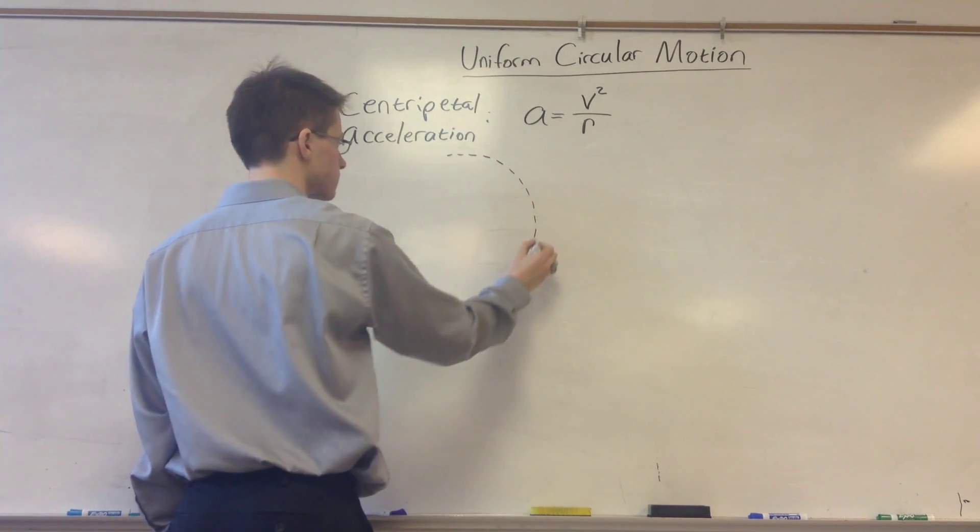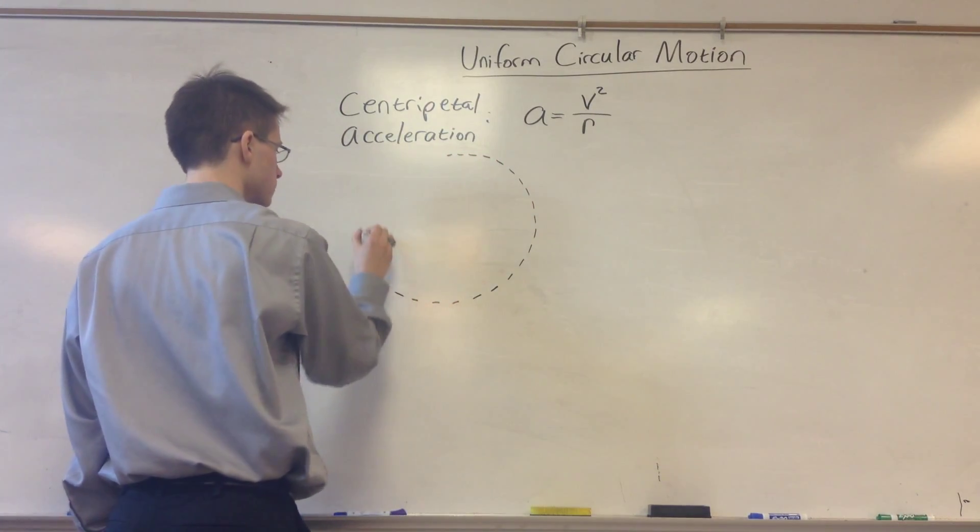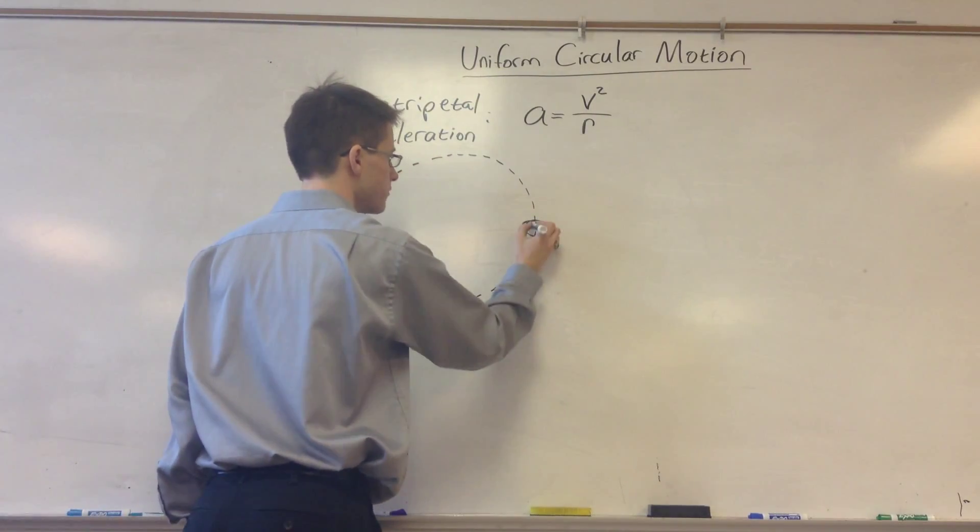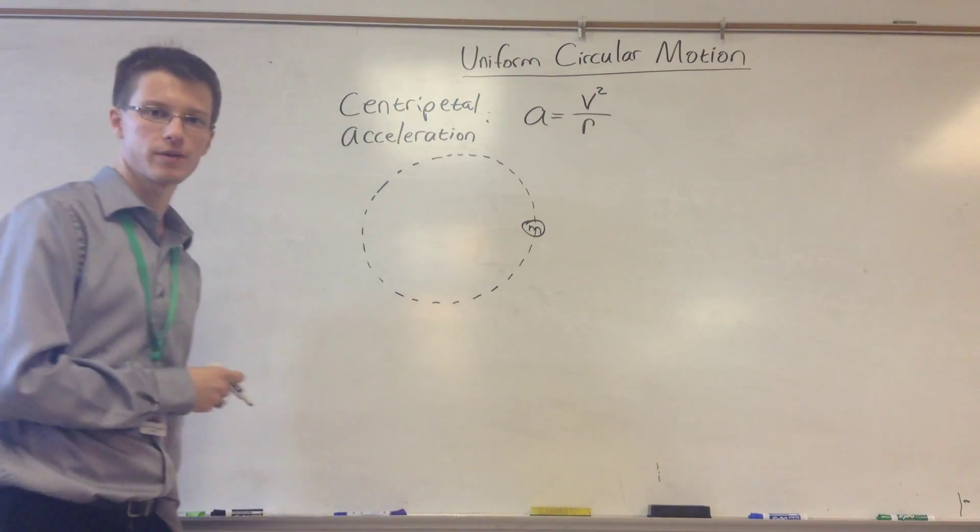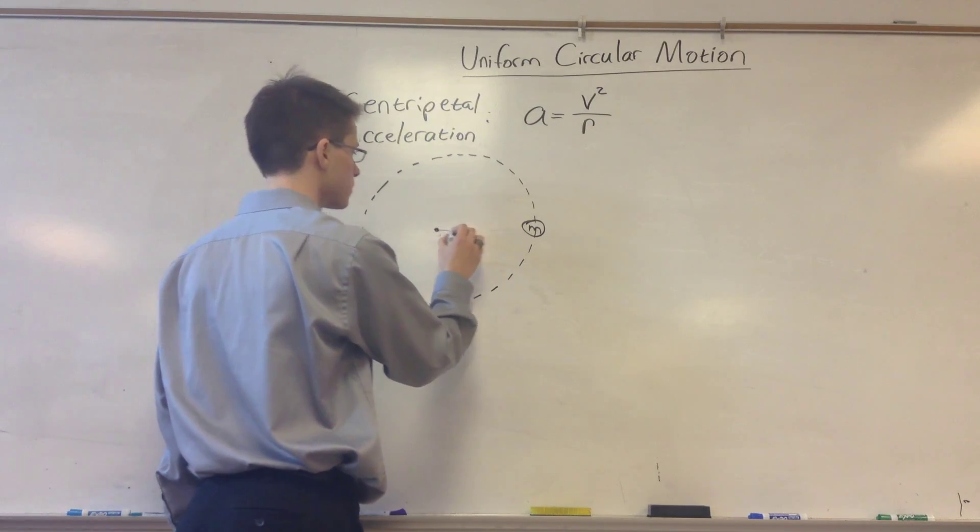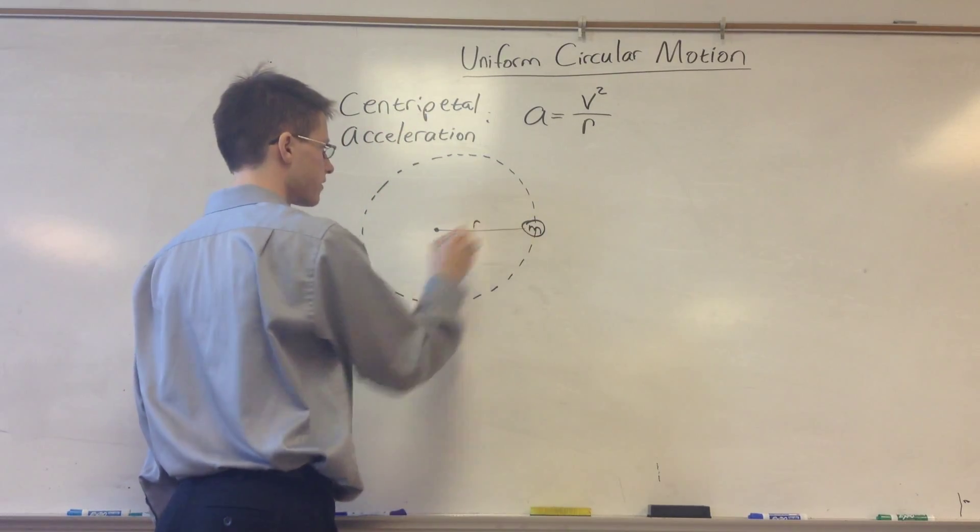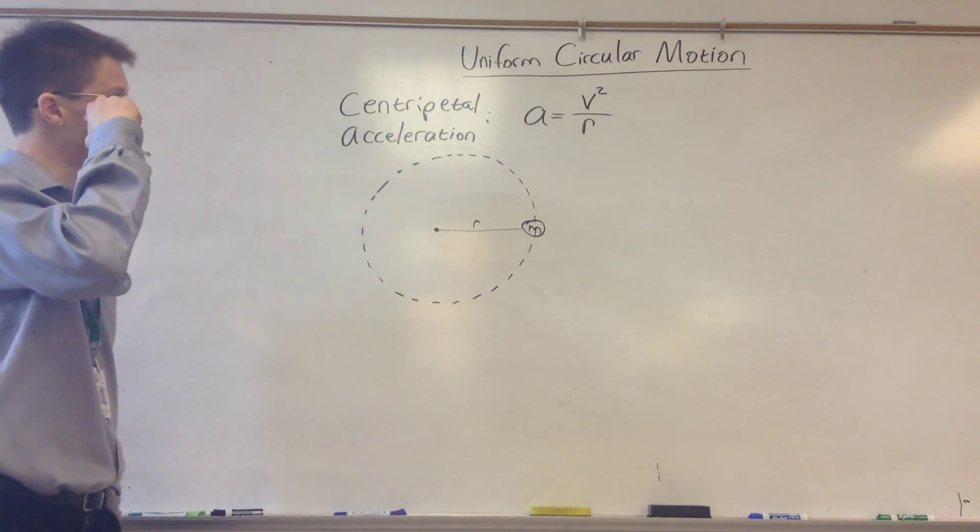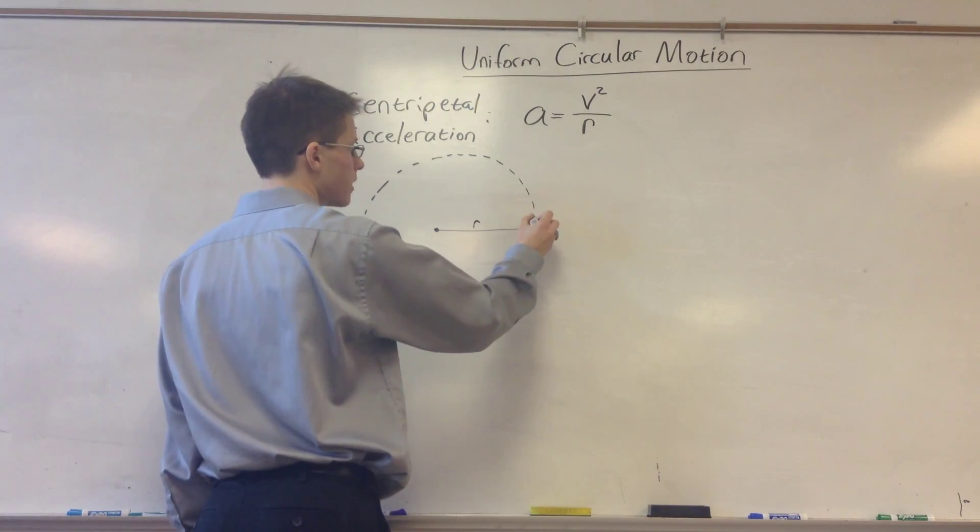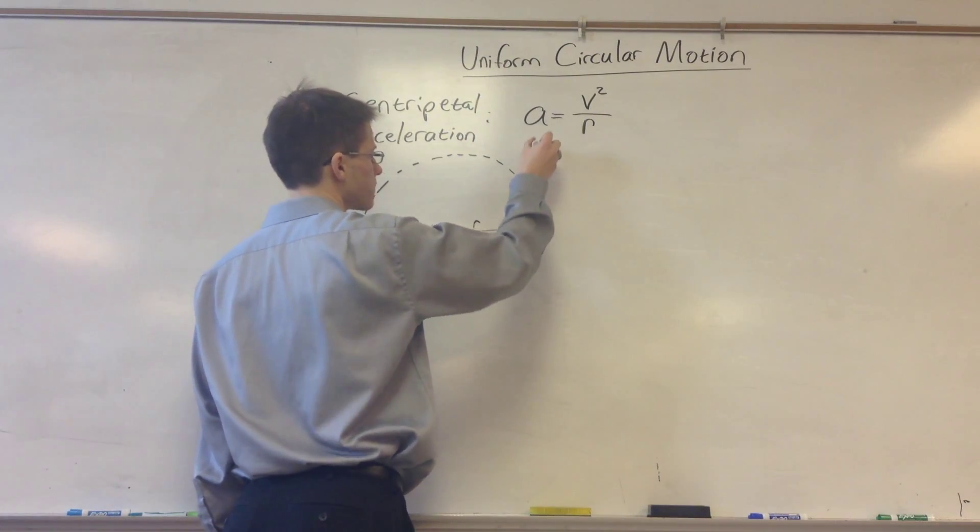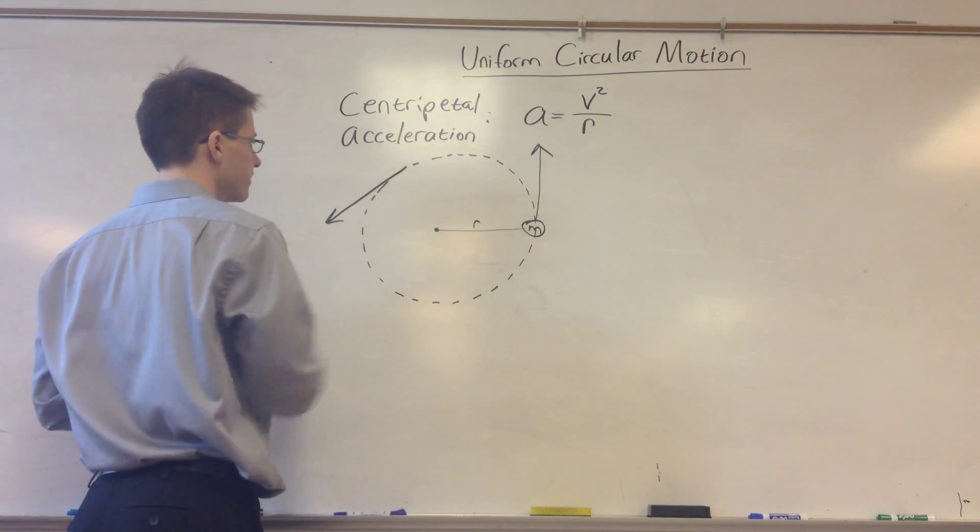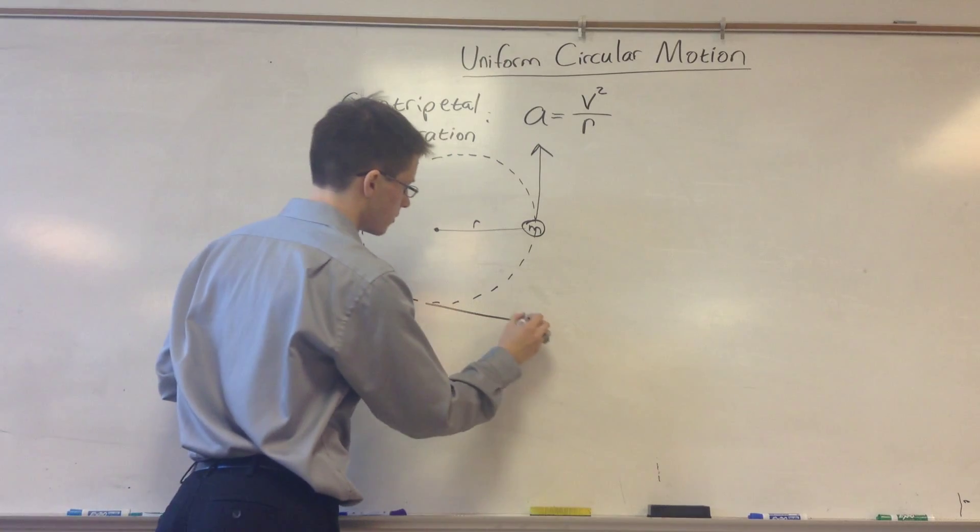So to kind of draw that out, I have some object of mass m, not that that's really relevant here, and let's say I have it tied to a rope. So the rope is going to be of length r, because it's the radius of the circle that I'm making, and as I swing this around, it's going to have some velocity, some speed, and that's going to be tangential to the direction of the circle. So here it's going to be straight up like that, over here it's going to be down like that, over here it's going to be over there like that.